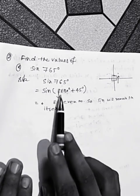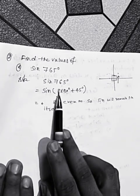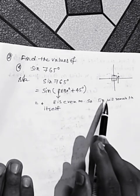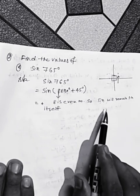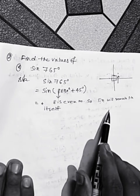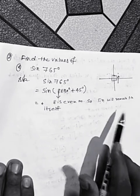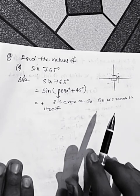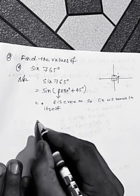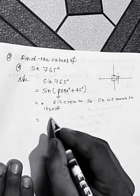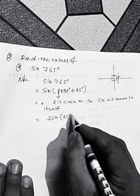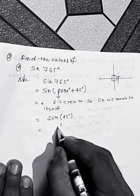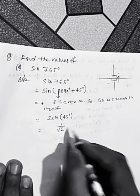But if the number is odd, then sine will change to cos, cot will change to tan, sec will change to cosec, and vice versa. So since 8 is even, the function stays as sine of 45 degrees, which equals 1 by root 2.